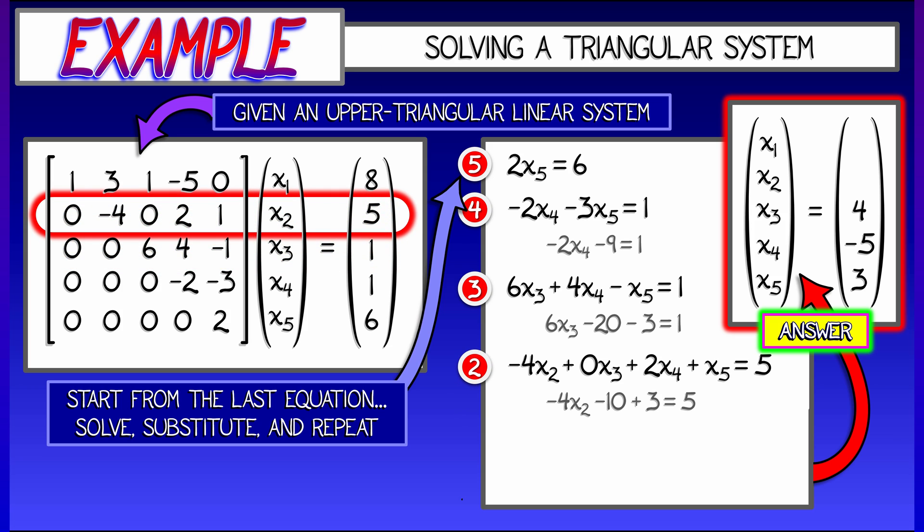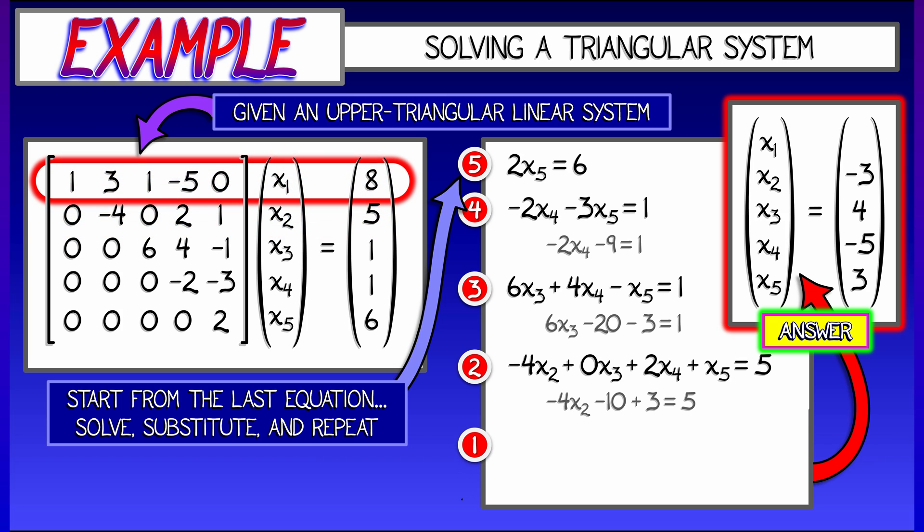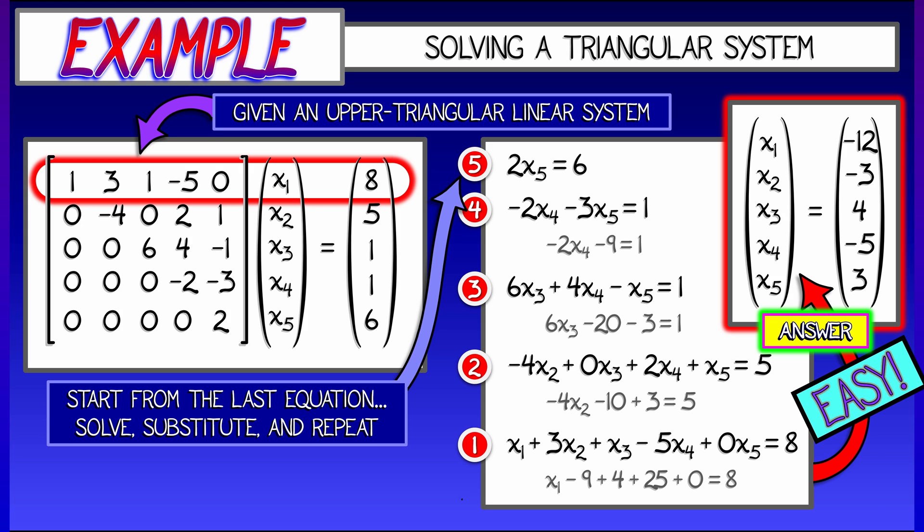And now you know exactly what we're going to do. We're just going to write down the rest of the equations using the rows of the matrix, going in reverse order, plug in the things that we already know, and then read off the answers. In the end, we get all the solutions. And it was totally easy.